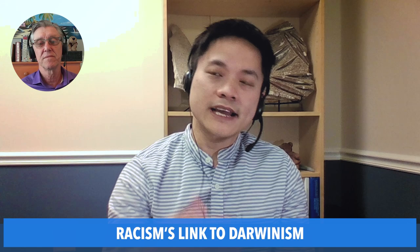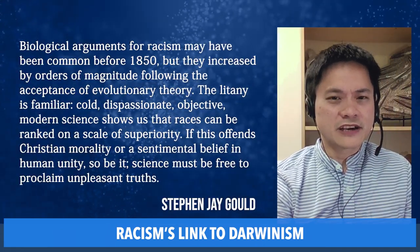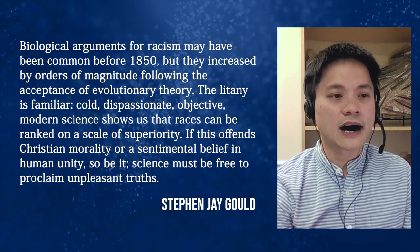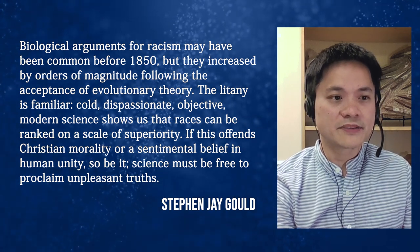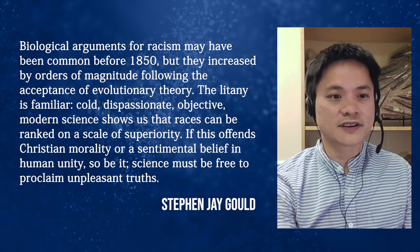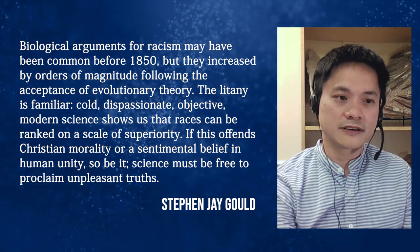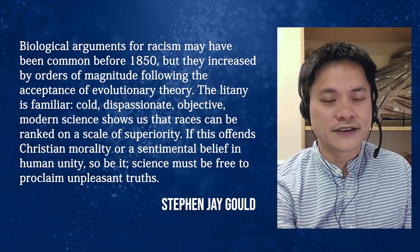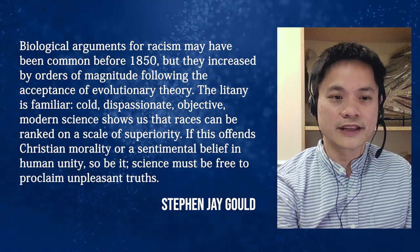Interestingly, Charles Darwin, even though he was very racist, was actually against slavery. One of the leading evolutionists of the last century, Stephen Jay Gould, wrote about this. He says: 'Biological arguments for racism may have been common before 1850, but they increased by orders of magnitude following the acceptance of evolutionary theory. Cold, dispassionate, objective, modern science shows us that races can be ranked on a scale of superiority. If this offends Christian morality or a sentimental belief in human unity, so be it. Science must be free to proclaim unpleasant truths.' Gould, himself against racism, admits that racism increased after the 1850s — that is, after Darwin published his book in 1859.